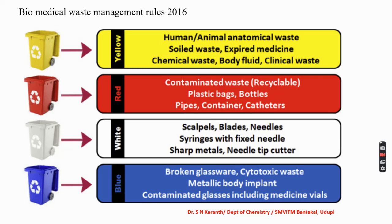Red waste is contaminated, recyclable waste such as plastic bags, bottles, pipes, containers, catheters, etc. White waste includes blades, needle sharp components, needle tip cutters, and sharp metals. Blue waste includes broken glassware, cytotoxic waste, metallic body implants, and contaminated glass including medicine vials.